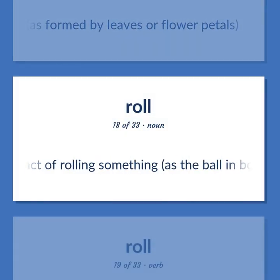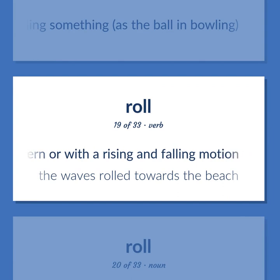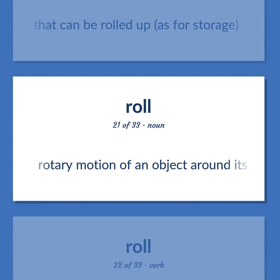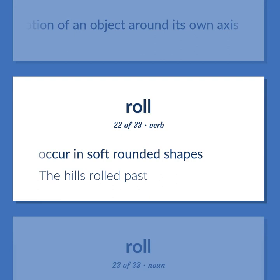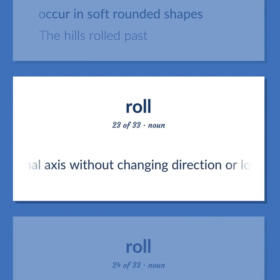The act of rolling something, as the ball in bowling. Move in a wavy pattern or with a rising and falling motion — the waves rolled towards the beach. A document that can be rolled up, as for storage. Rotary motion of an object around its own axis. Occur in soft rounded shapes — the hills rolled past.